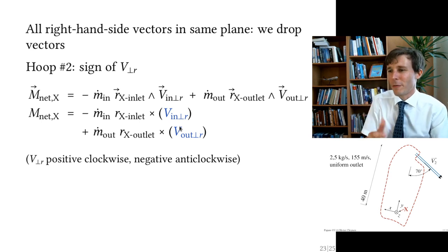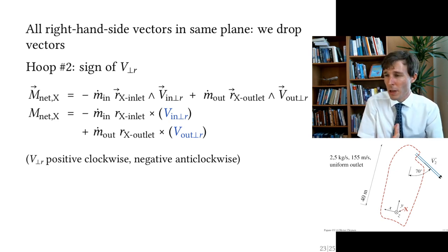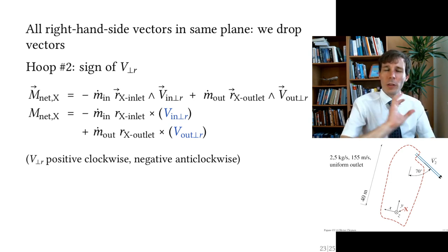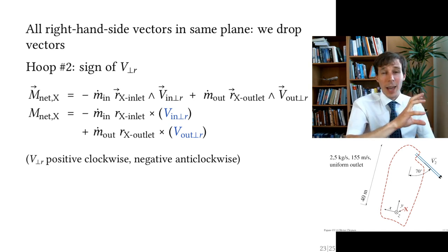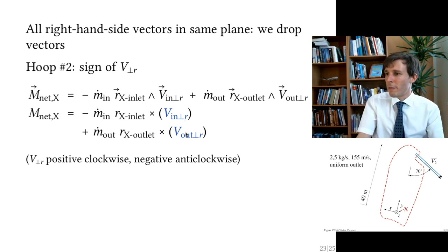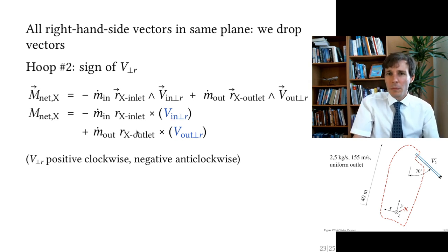Which terms are positive or negative? The convention is: look in the positive direction; if the vectors rotate clockwise, the result is positive; if anti-clockwise, it is negative. In our case, v_⊥,in is zero — there is no perpendicular velocity component at the inlet.